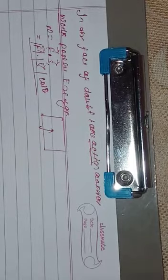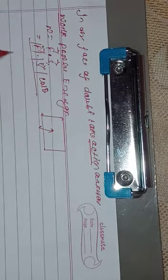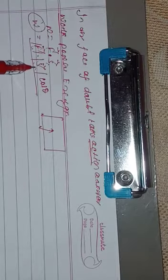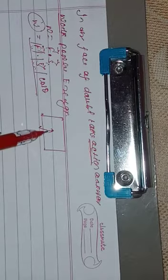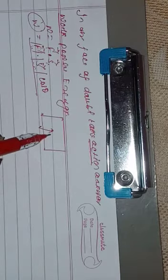Work is the dot product of two vectors. Force is a vector and displacement is also a vector. Expanding this: W = |F| × |s| × cosθ. So work depends upon two factors: force and displacement. If the wall does not move upon application of force, there is no displacement, and hence no work.